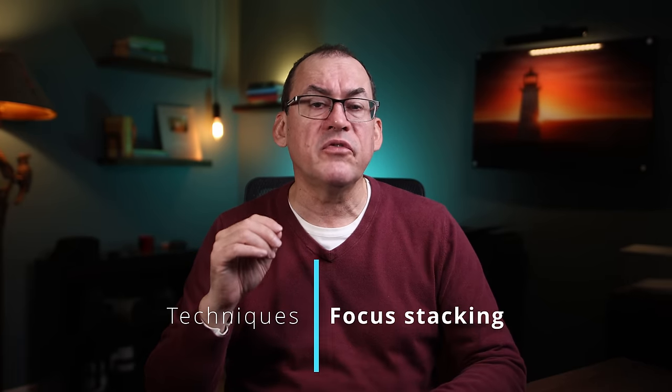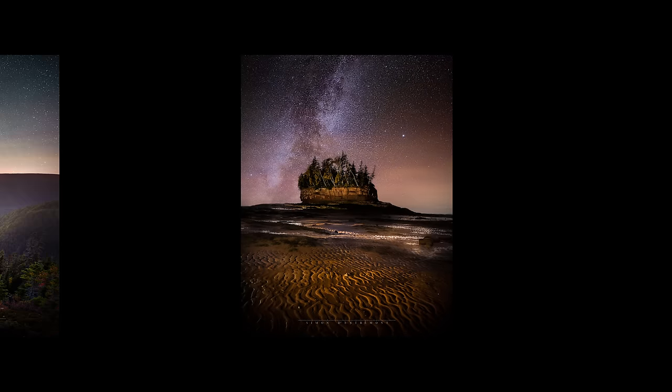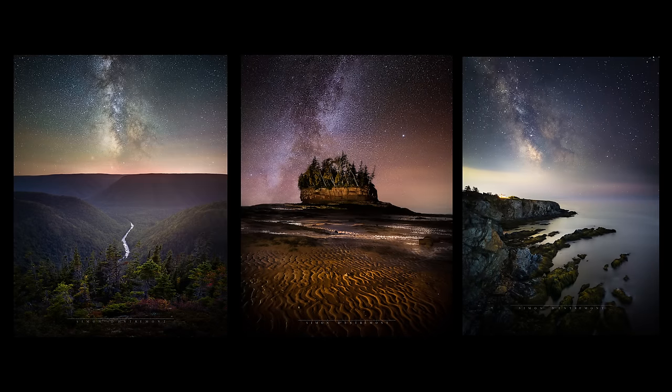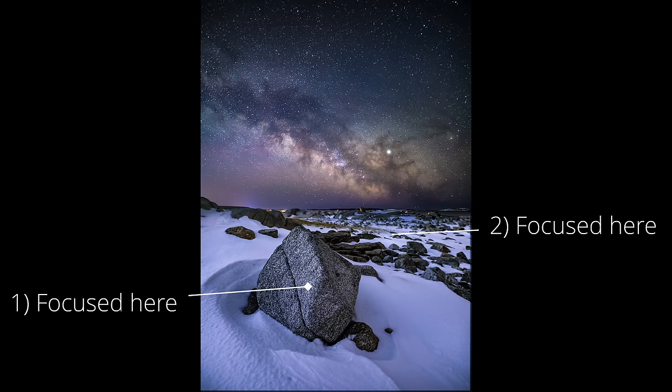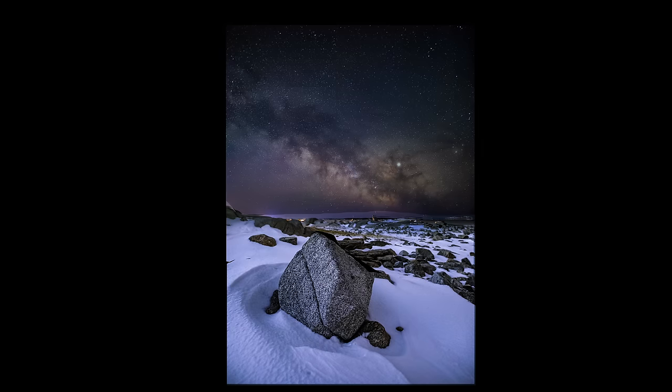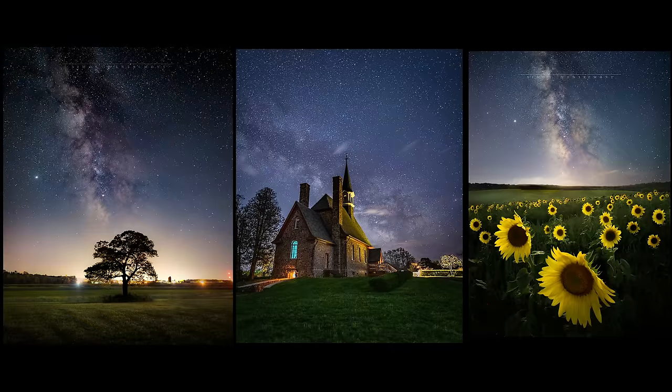Another workaround when you don't have enough depth of field is focus stacking. I use this in astrophotography because I can't stop down to f14 in the dark — I need to shoot the Milky Way at fast apertures like f1.4 or f1.6, and shooting a dark foreground at f14 would take an hour. So I shoot two or three images with thin depths of field focused in the foreground, mid-ground, and infinity, then combine them in Photoshop using only the in-focus section of each photo to make one composite with all in-focus sections together.